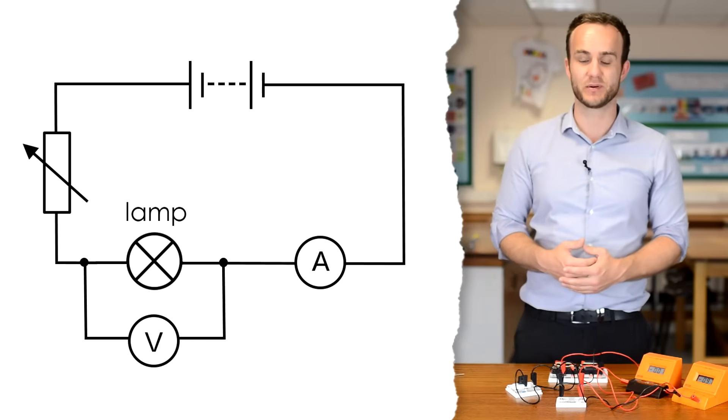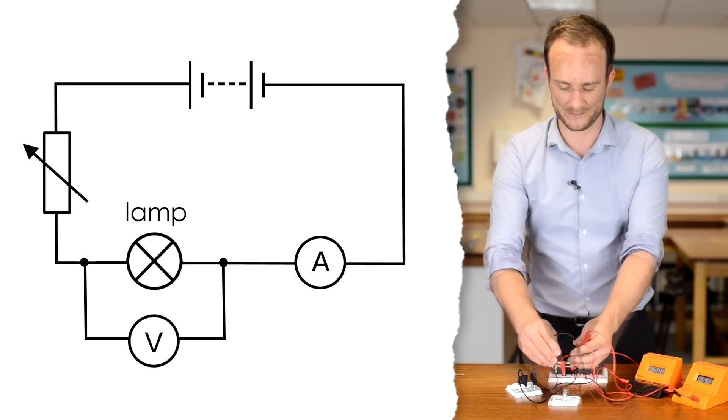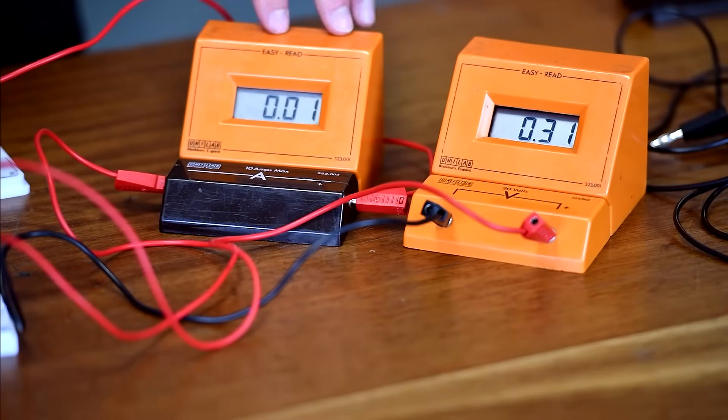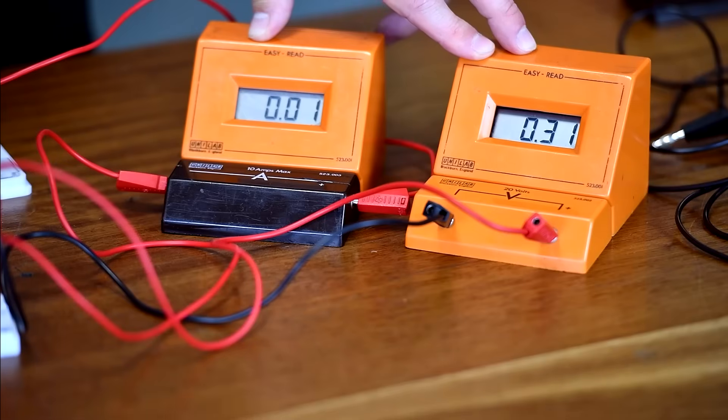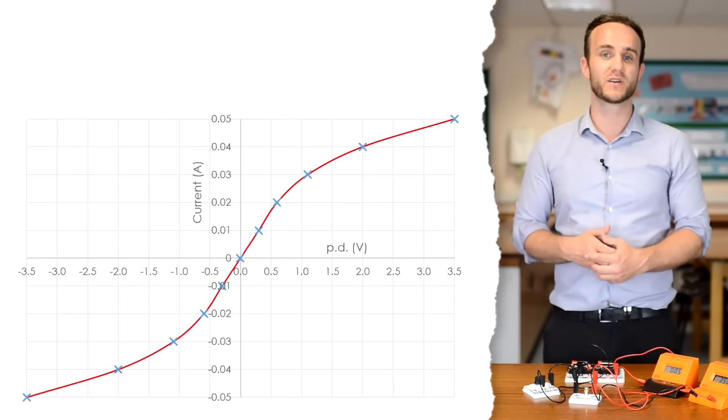Next, let's check the filament lamp. All I have to do is unplug the leads from my resistor and pop in my lamp instead. It doesn't matter whether you start with positive or negative values, you just need to make sure you do both. So starting with 0.01 amps, I can see that I now have a PD of 0.3 volts across it. I'm just going to get the rest of my results for 0.02 all the way to 0.05 amps. My final result of 0.05 amps, that needs a PD of 3.5 volts in order to push that current through the lamp. So having my negative values as well, here's my plotted graph of current against PD.